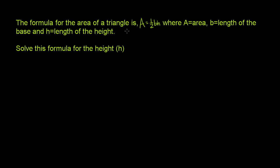The formula for the area of a triangle is A = 1/2 bh, where A is equal to area, b is equal to length of the base, and h is equal to the length of the height. So area equals one-half times the length of the base times the length of the height.